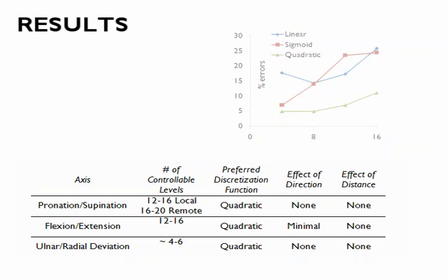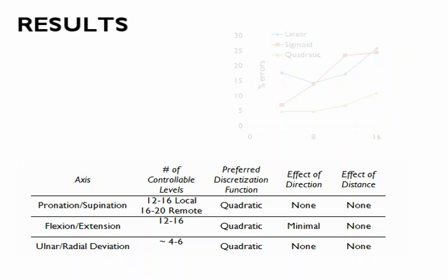The studies revealed several interesting facts about tilt control. We experimentally determined the practical limit on target width and the number of controllable levels for each axis. We found that using a quadratic discretization function significantly improves targeting performance in terms of time and number of errors. Users found it much easier to select a target when the system used this function. Interestingly, we found that in general there was no preference for direction of movement — no part of the range of motion was easier to move to than any other — and we observed similar performance with remote and local feedback.